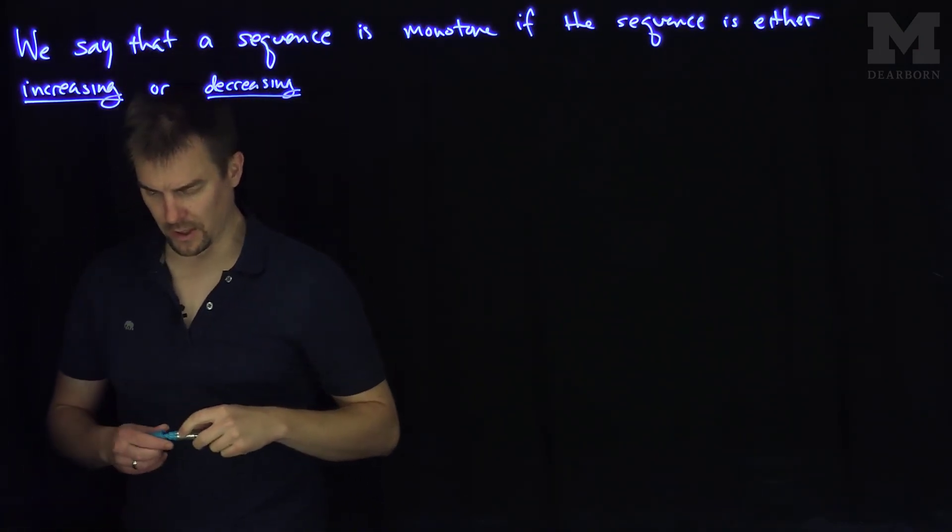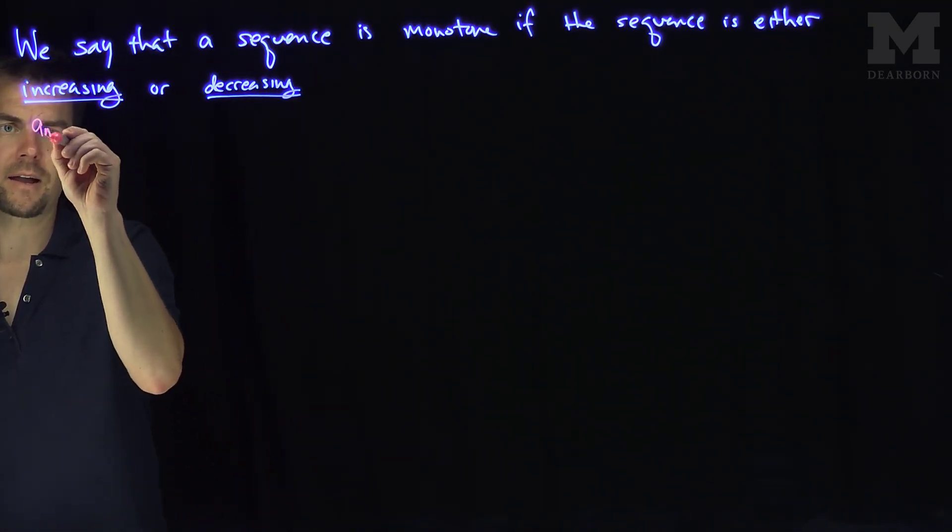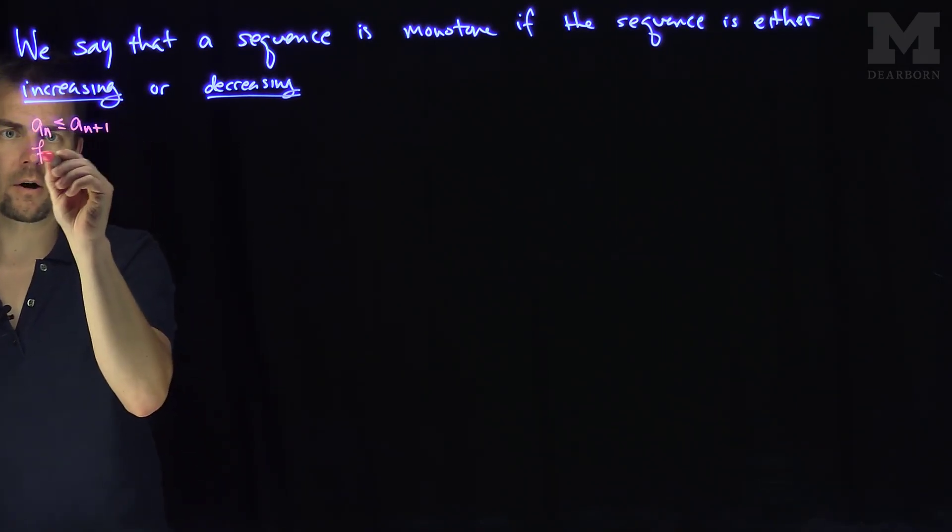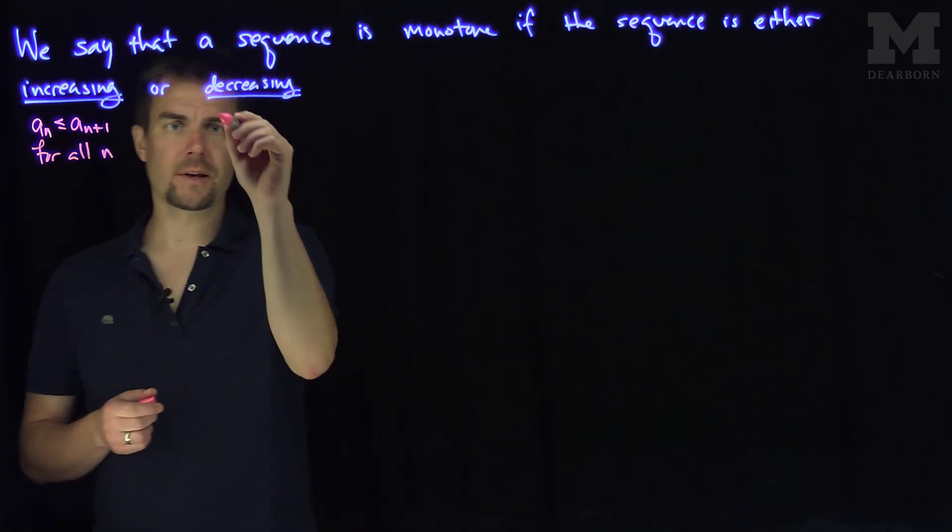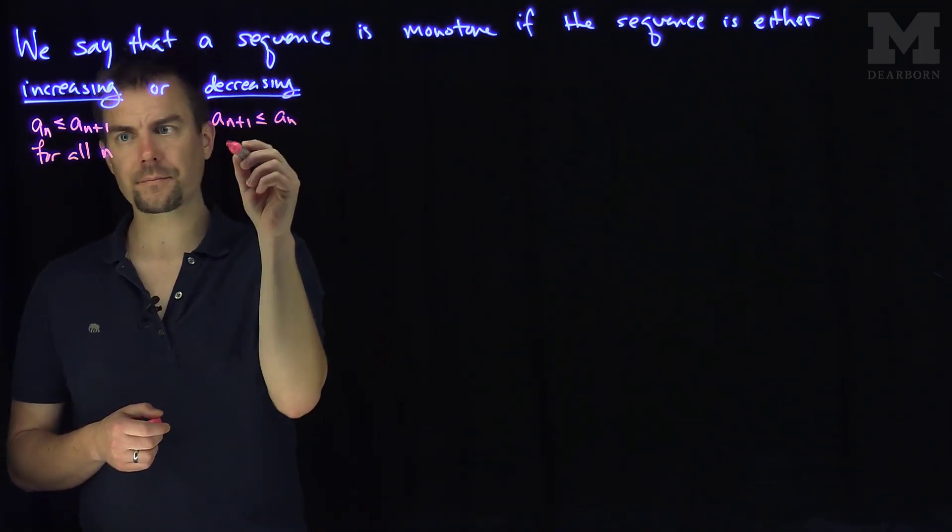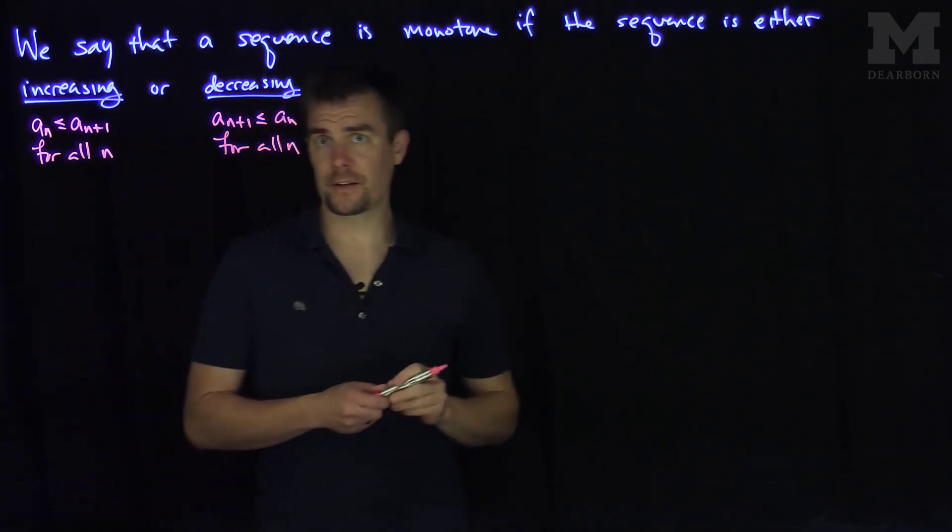We say that a sequence is monotone if the sequence is either increasing or decreasing. Increasing means that a_n is less than or equal to a_(n+1) for all n. Decreasing means that a_(n+1) is less than or equal to a_n for all n.